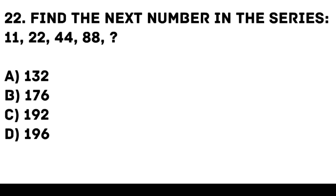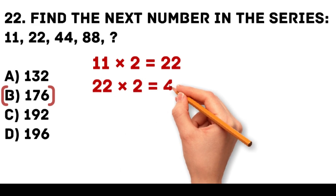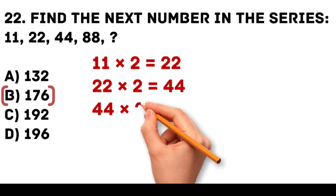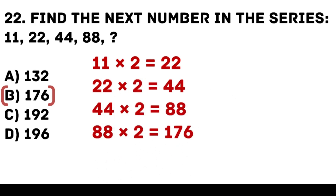Answer: B. 176. Each number in the series is multiplied by 2. 11 times 2 is equal to 22. 22 times 2 is equal to 44. 44 times 2 is equal to 88. 88 times 2 is equal to 176.